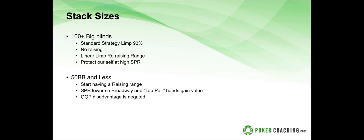At 50 big blinds or less, we now have a raising range because the SPR is lower. Offsuit broadway hands and hands that can make good top pairs go way up in value, and the out-of-position disadvantage is negated because of that lower SPR. SPR — stack-to-pot ratio — was covered in one of the previous webinars, available as a replay on the Poker Coaching YouTube channel.